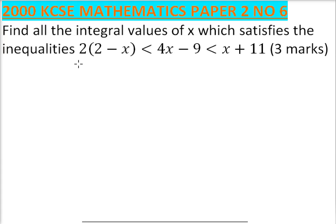2000 paper 2 number 6. Find all the integral values of x which satisfies the inequalities 2(2-x) less than 4x minus 9 less than x plus 11. So for us to be able to do that, we first of all solve this part.